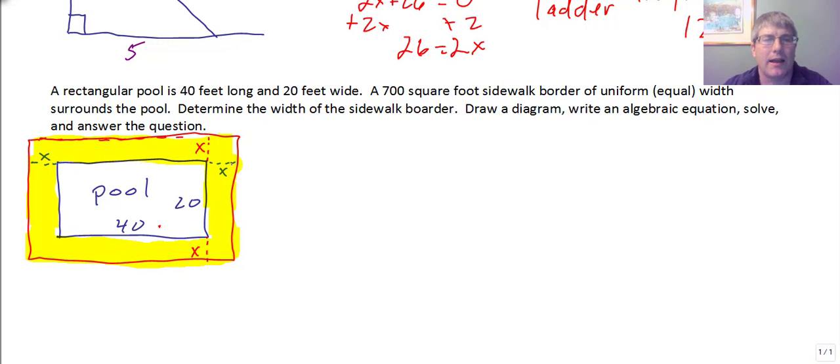We want to determine the width of this particular sidewalk. That's our unknown. It's x. And it's x to the right of the pool and x to the left of the pool. So as it turns out, this dimension, this length, while it's 40 from matching the width of the pool, we have to add an x dimension on each side.